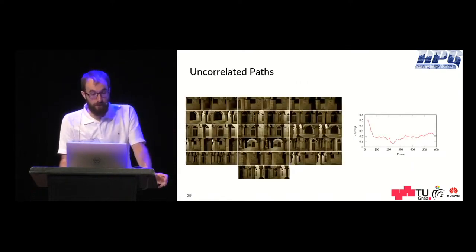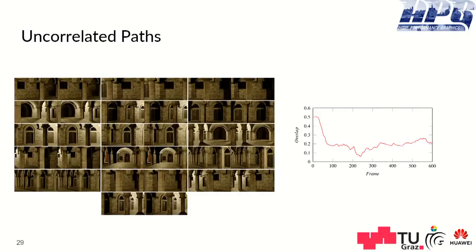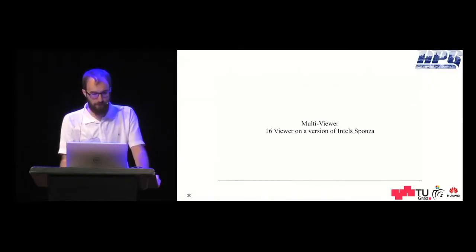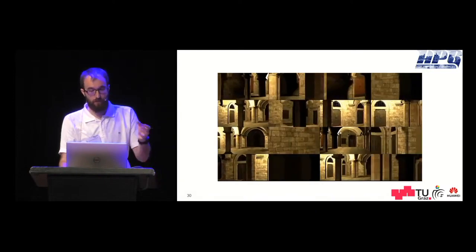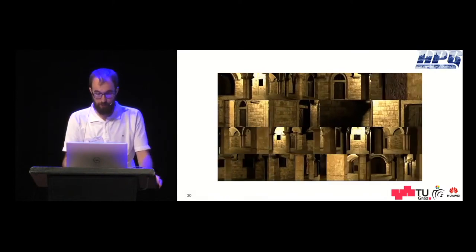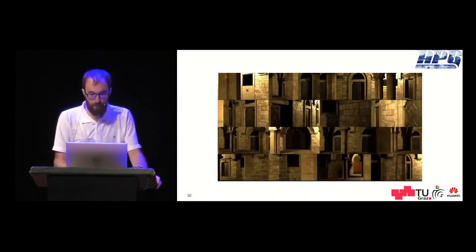Let's look at a more natural example. We have 16 uncorrelated paths through the Sponza scene which look like that. So they move uncorrelated through the scene. First they look all in the same direction and then they move uncorrelated.